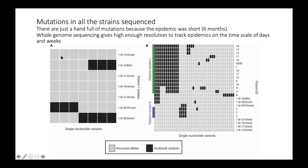Looking at strains isolated from patient number one: they sampled lots of different strains from different regions of the body. Many have no mutations at all, but some isolates do have mutations. This means the strain was actually evolving and accumulating mutations as it was infecting that patient — very similar to what we saw with the CF patients last time.